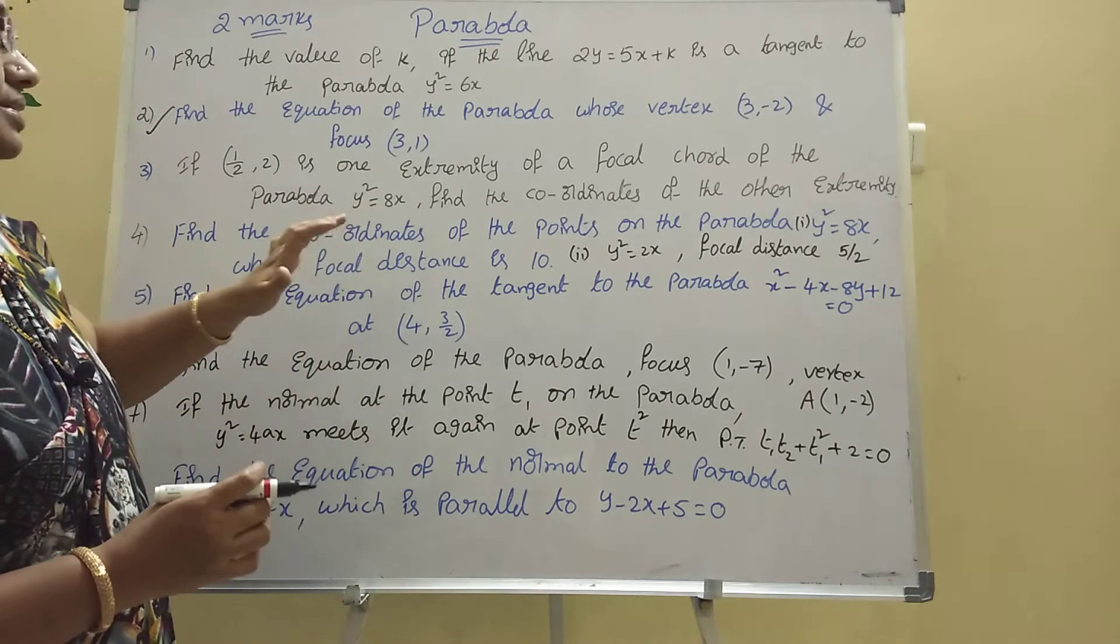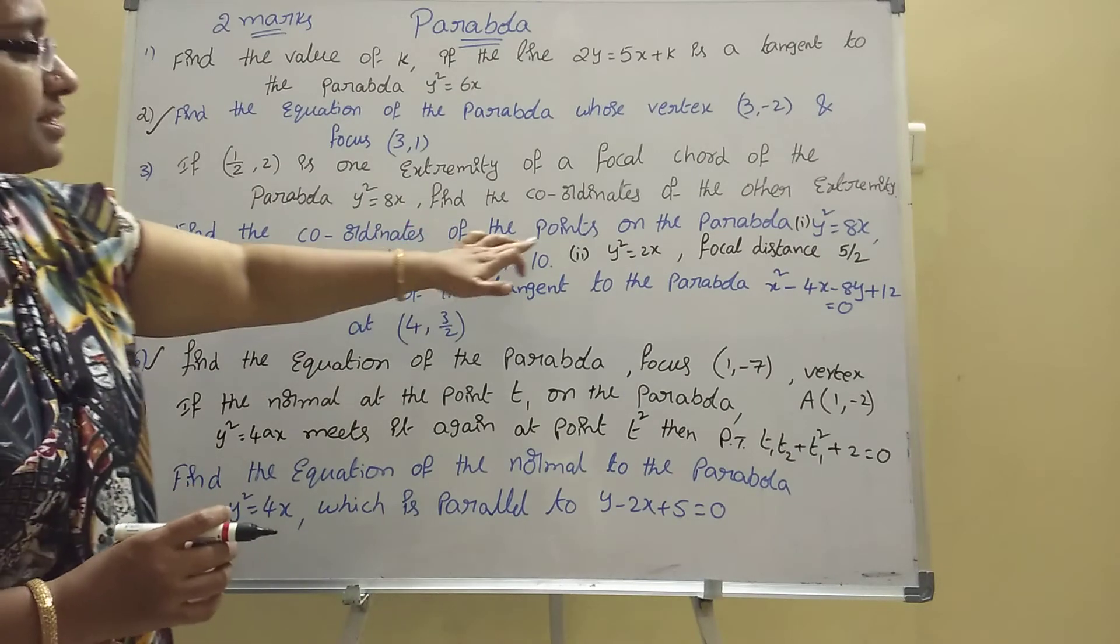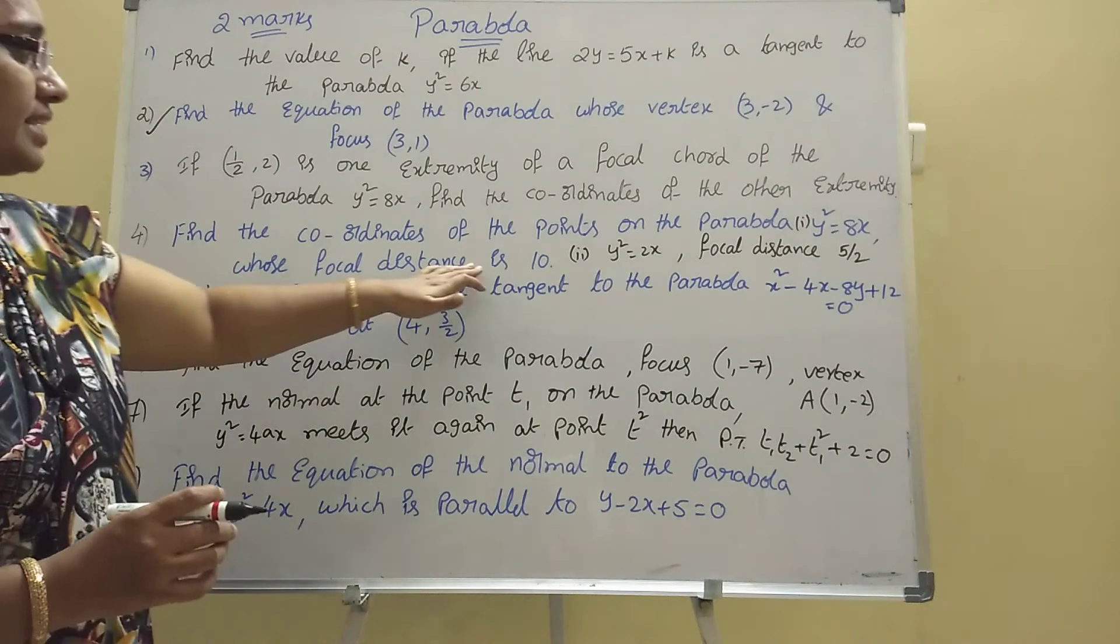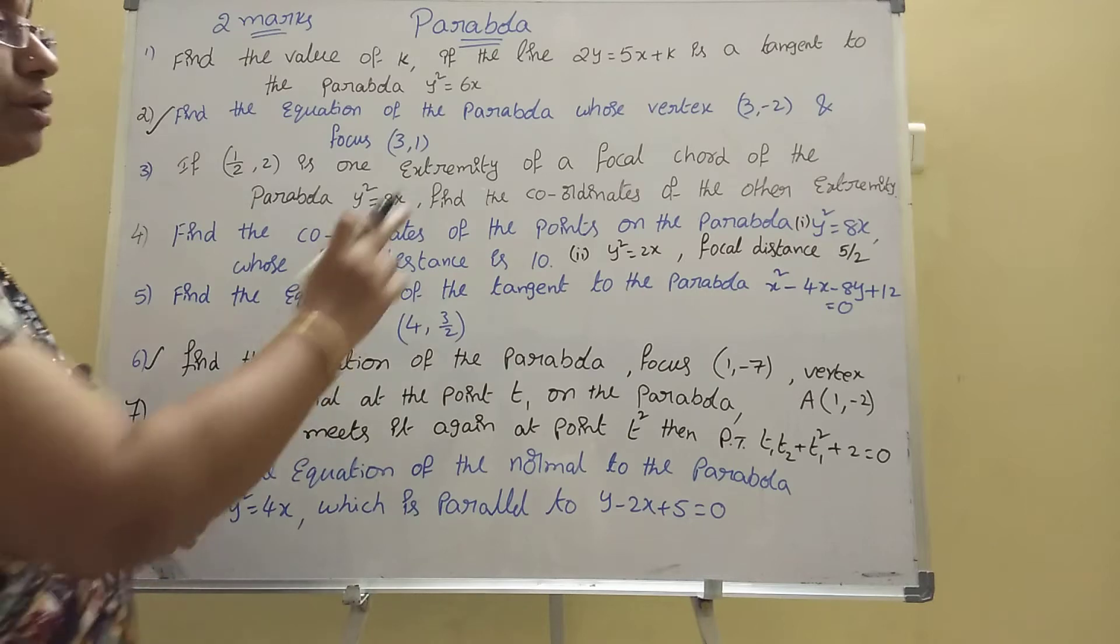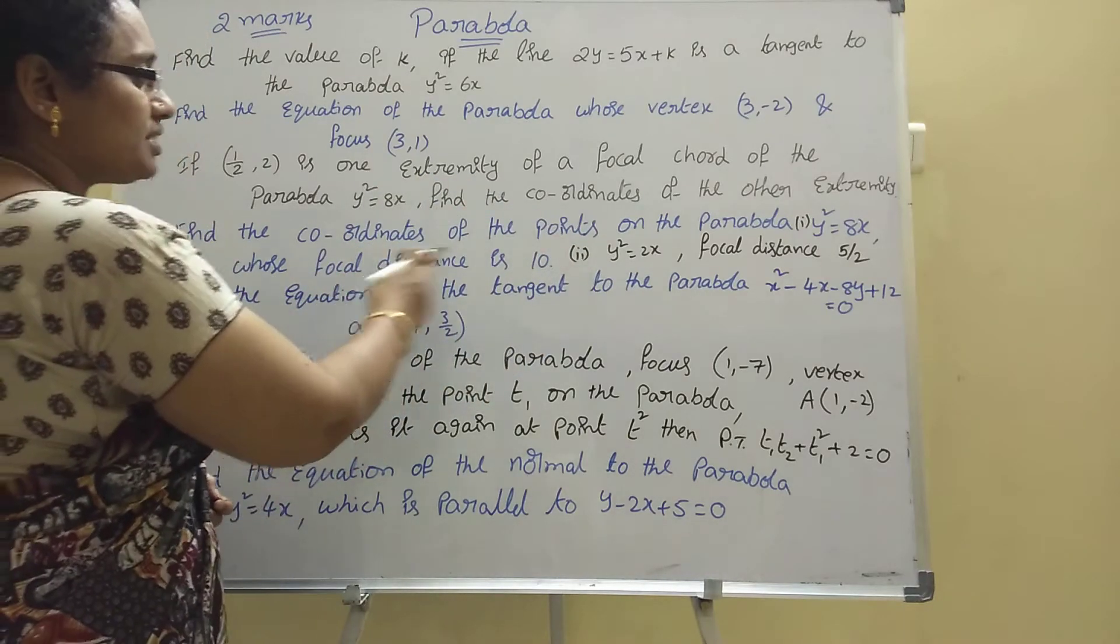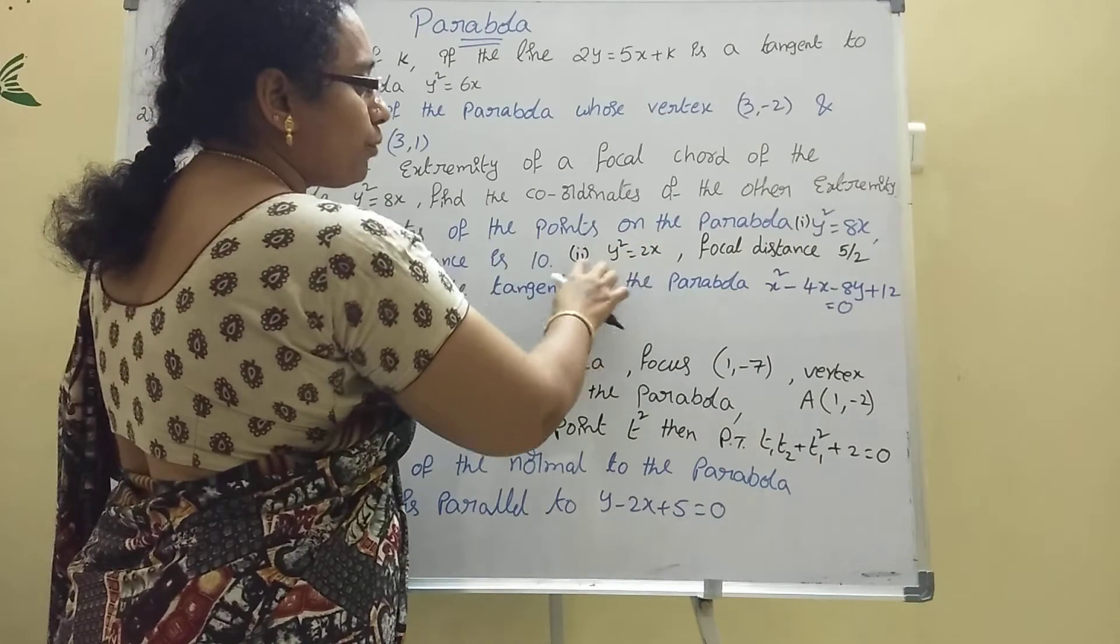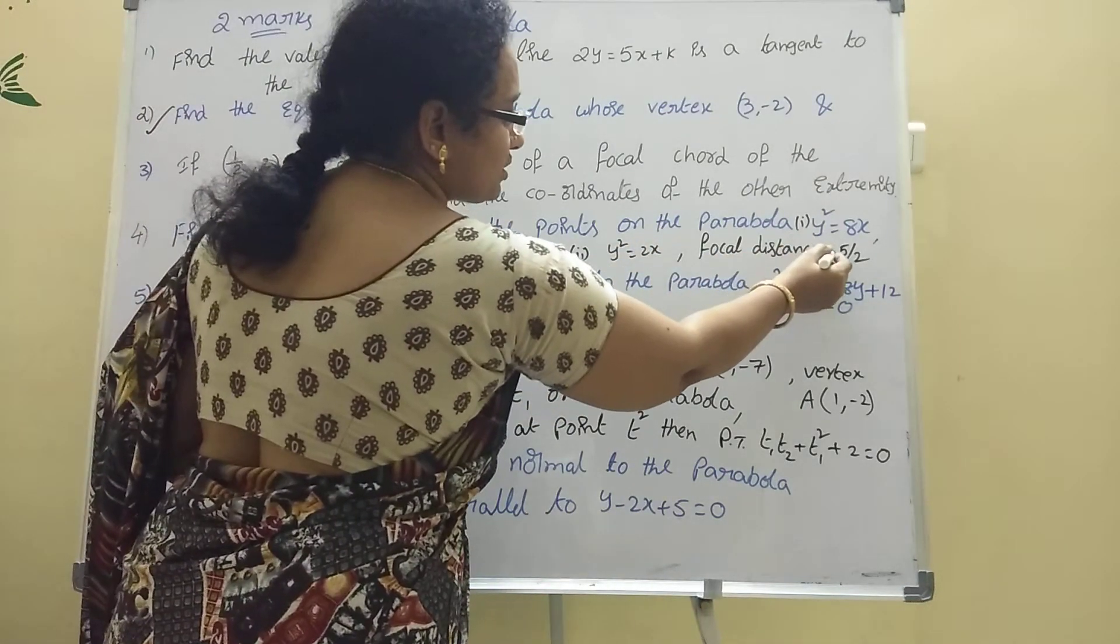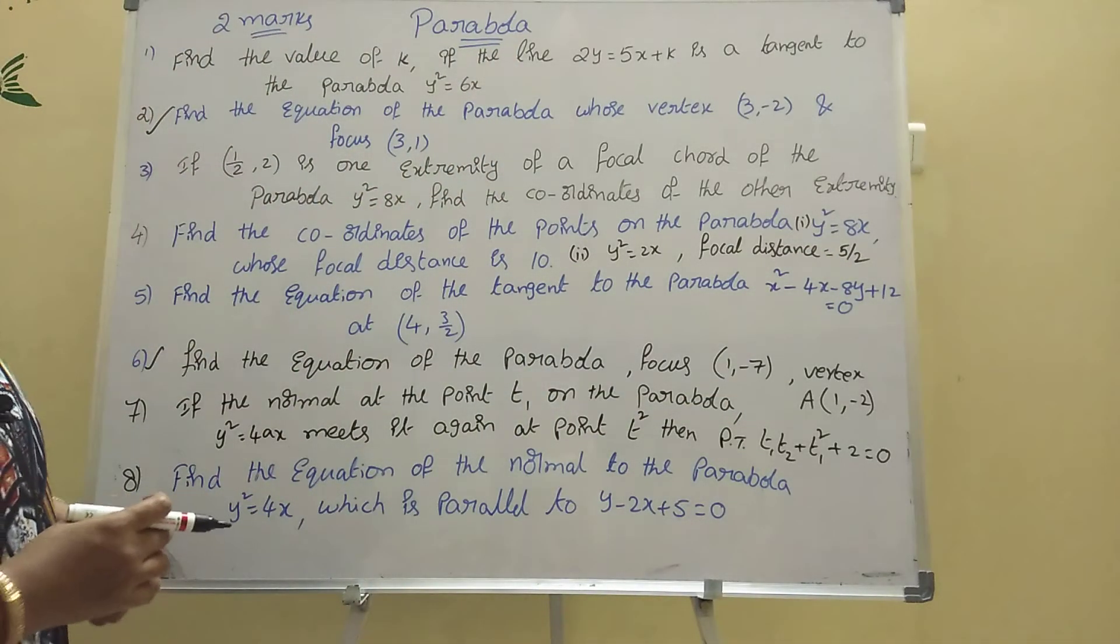Find the coordinates of the points on the parabola y² = 8x whose focal distance is 10. Here what is given: y² = 8x, focal distance is 10. Two sums like this, one model is y² = 2x, focal distance is 5/2. Four focal distances, you find out the points in that model.